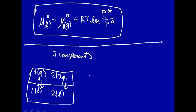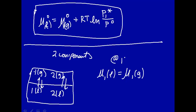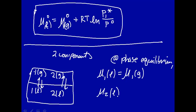So what we have now with these two components is that the chemical potential of one in the liquid phase is equal to the chemical potential of one in the gas phase. That's at equilibrium - at phase equilibrium. And the chemical potential of component two in the liquid phase equals the chemical potential of component two in the gas phase. That's what we mean by phase equilibrium.